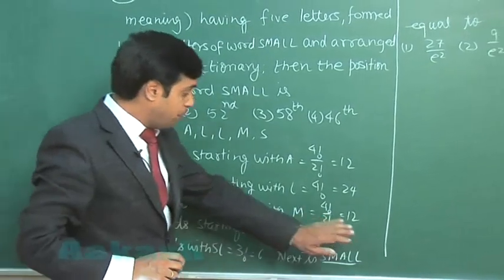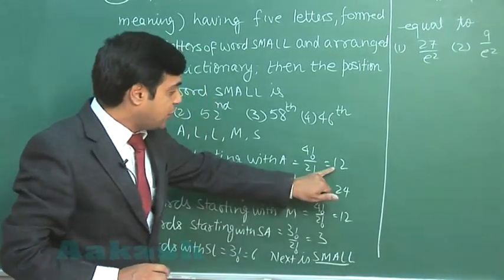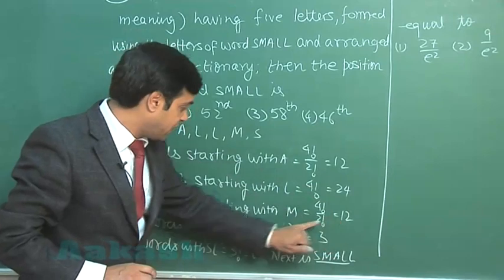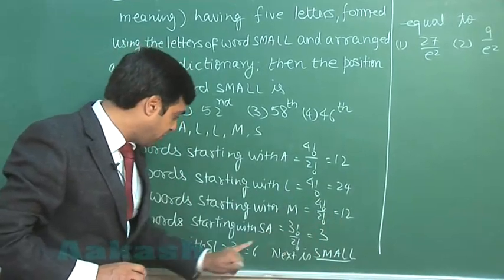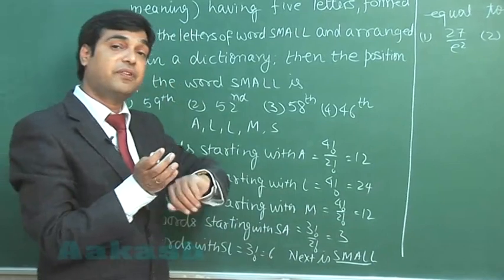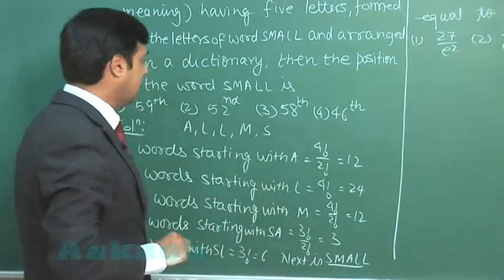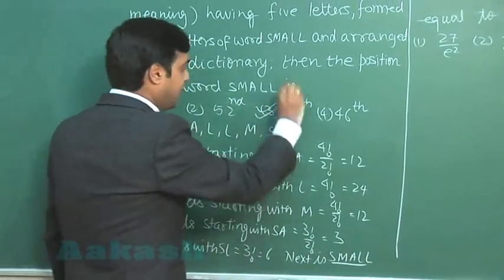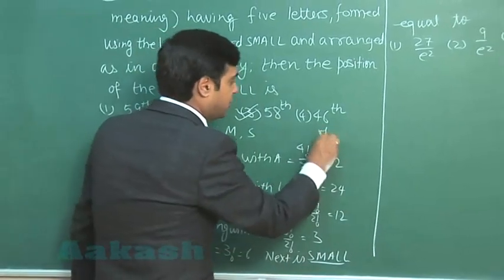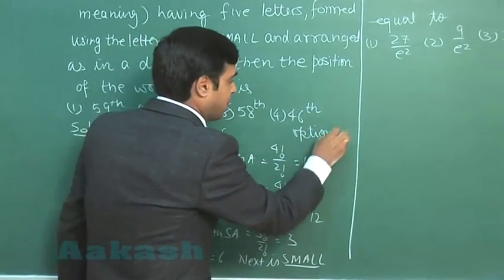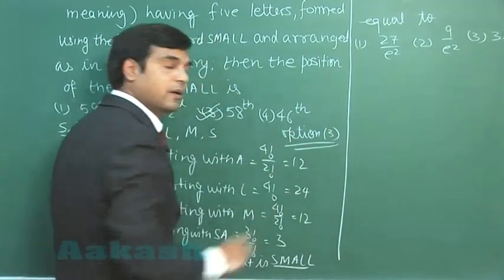So we simply find before SMALL there are 12 plus 24 plus 12, that is 48, plus 3, 51, plus 6, 57. There are 57 words before this word, so the rank is 58. So the correct option is option 3.